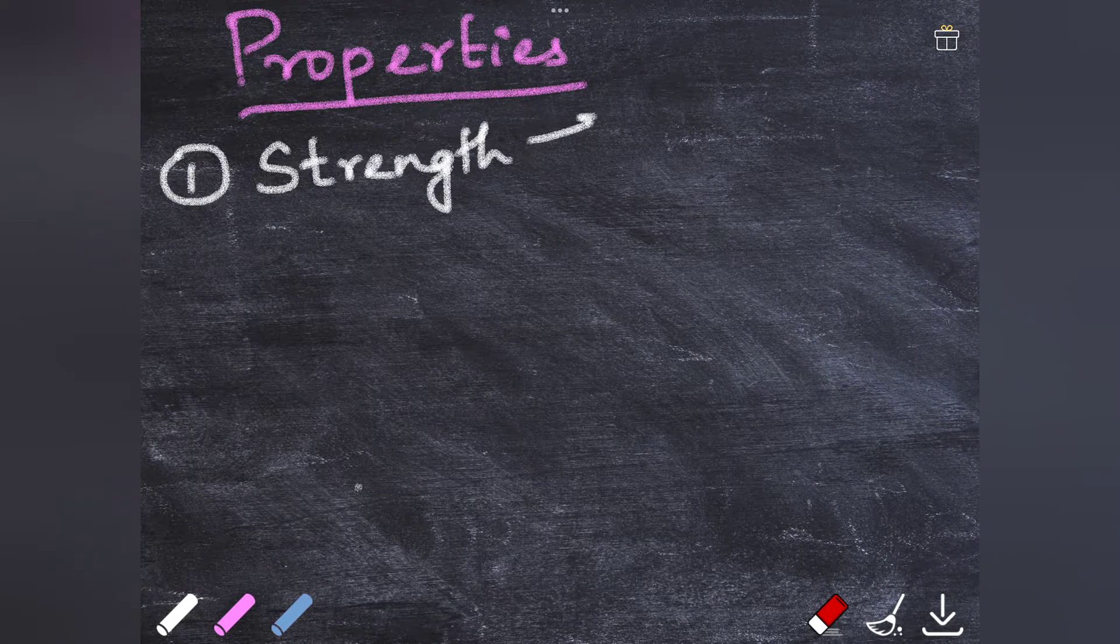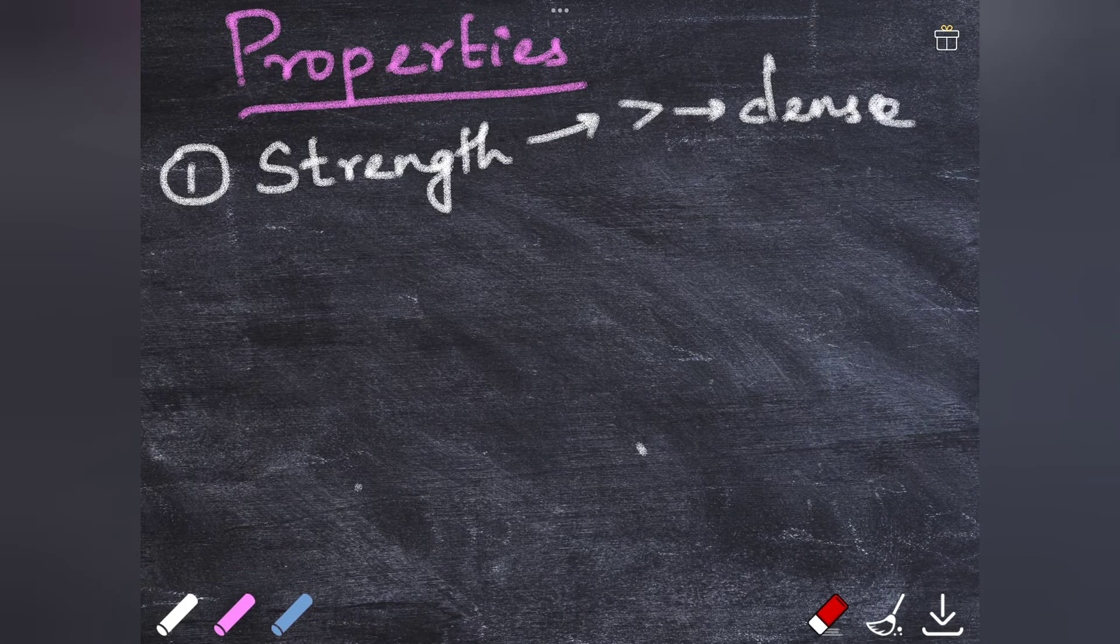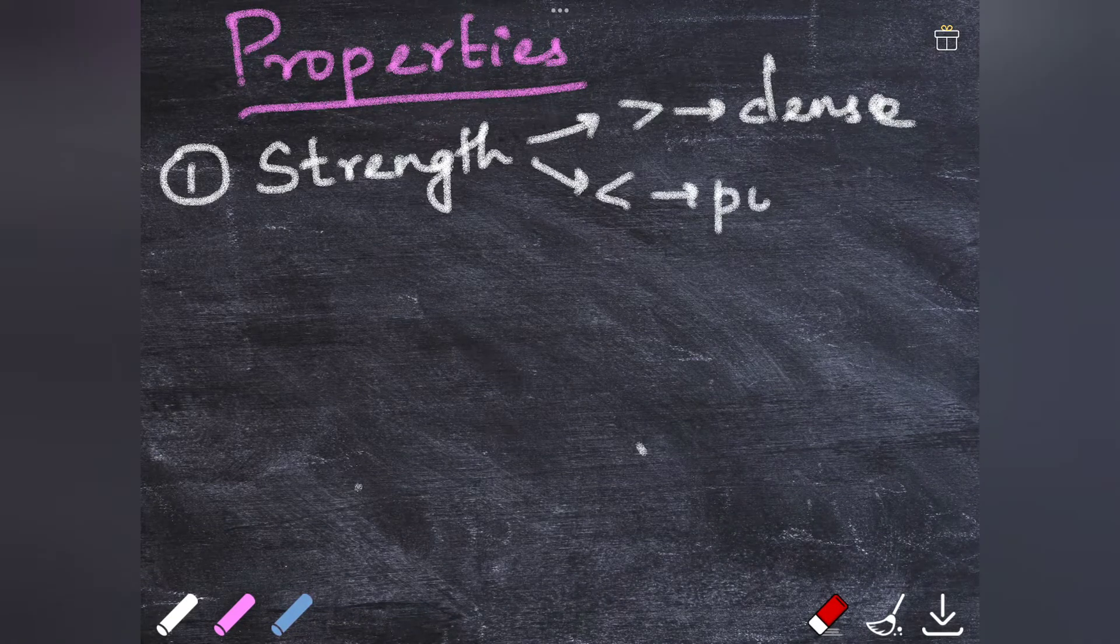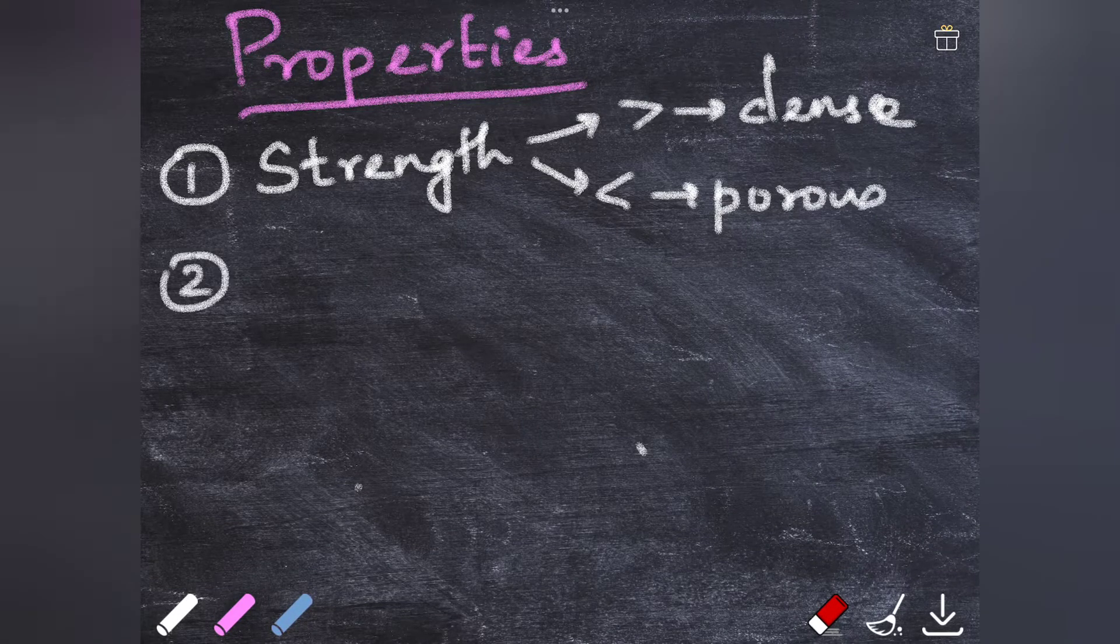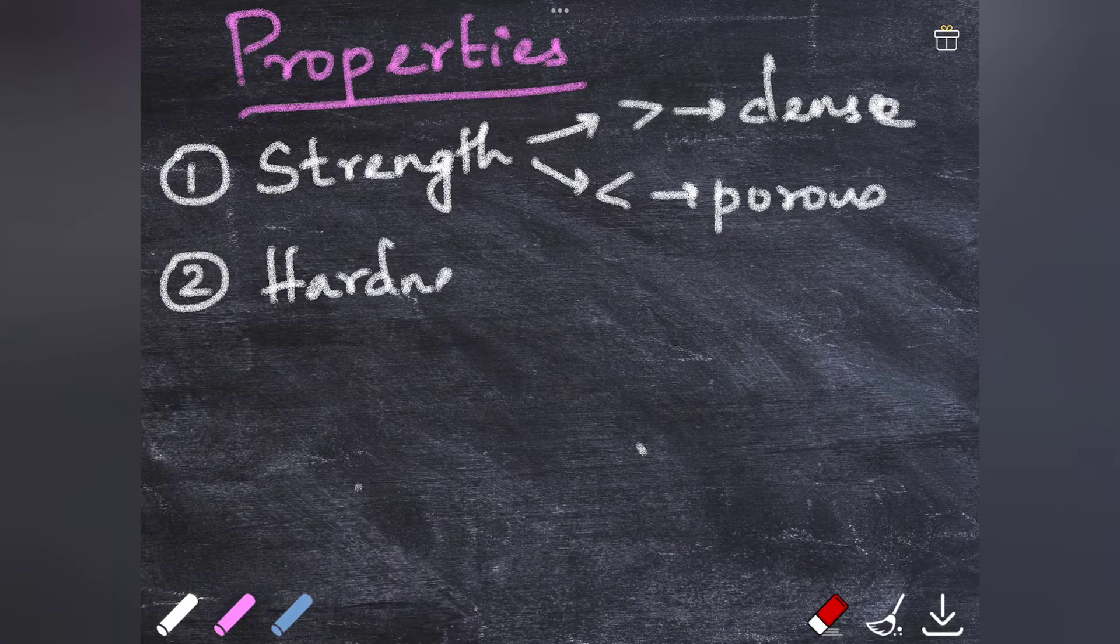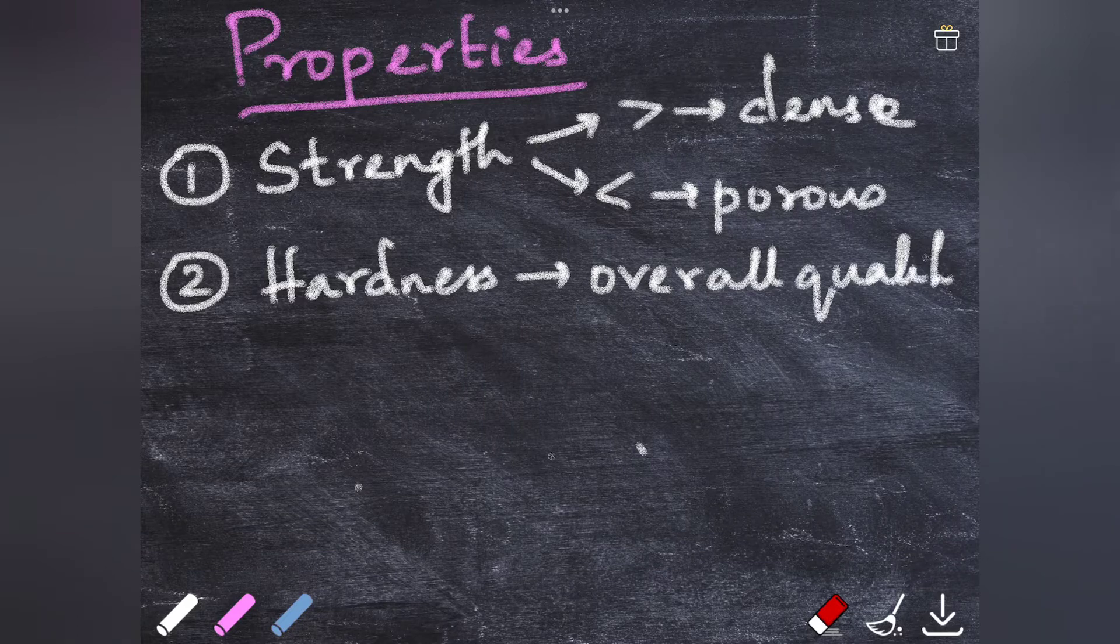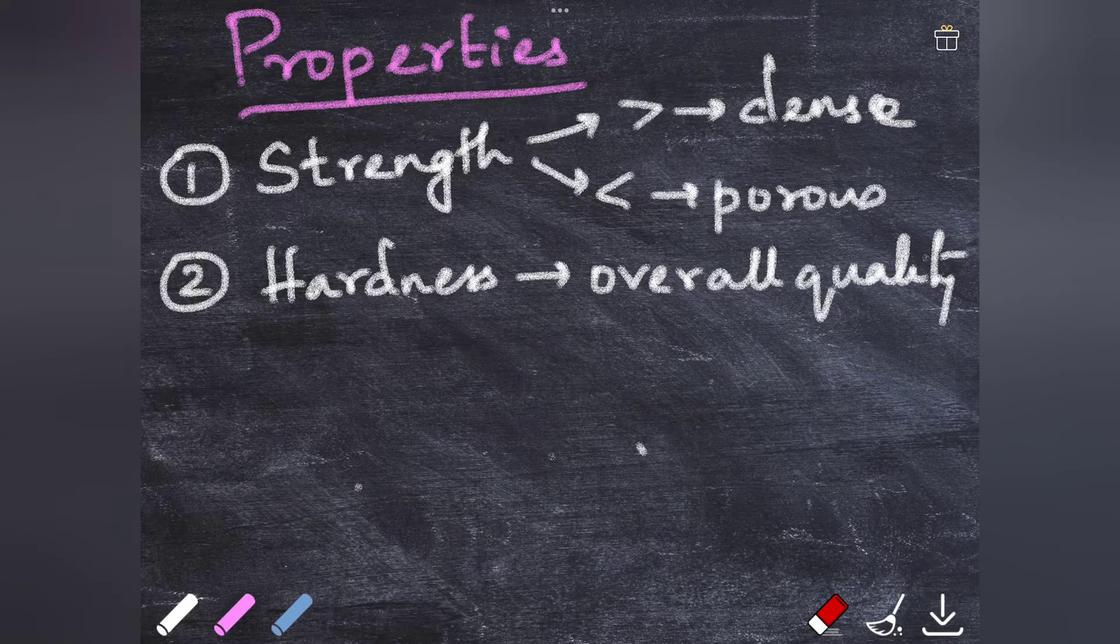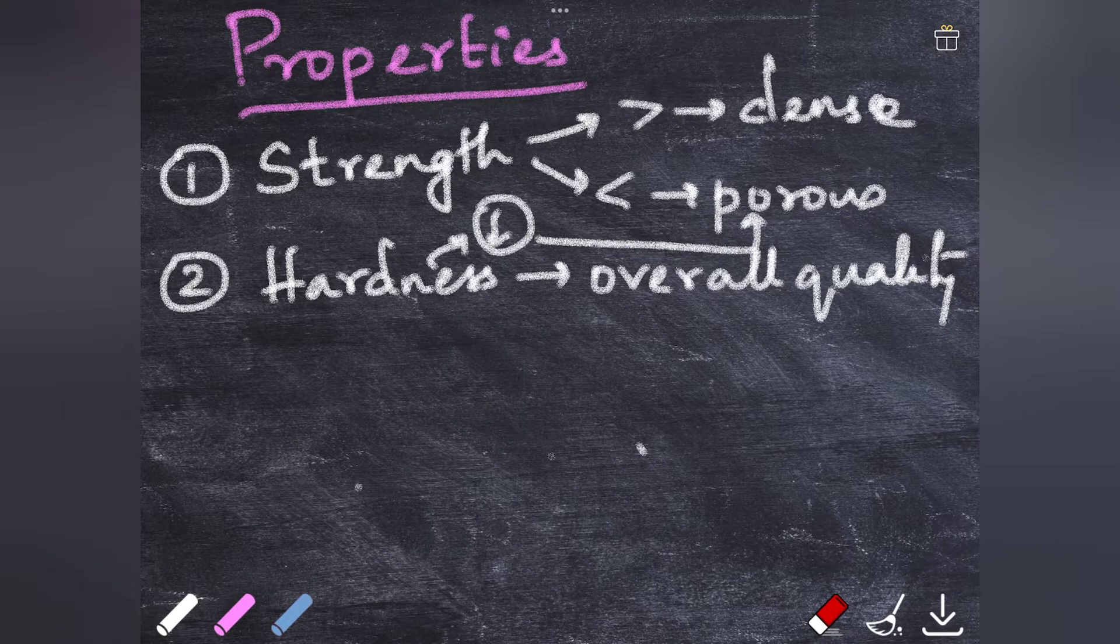The first property is that of strength. Strength is more in dense areas - that is obviously where there is more material - and it is less in porous areas where the layers are not compacted closely. Hardness is basically an indication of overall quality of the compacted gold. If in any area the hardness is less, it means that area has porosity.